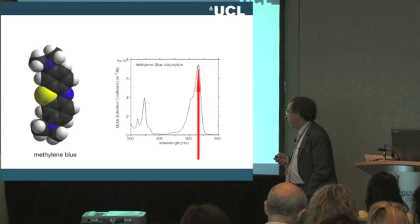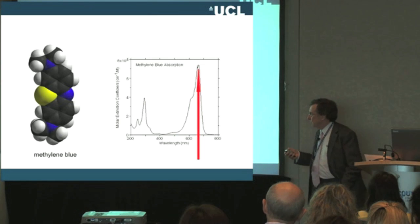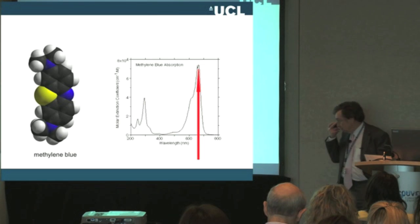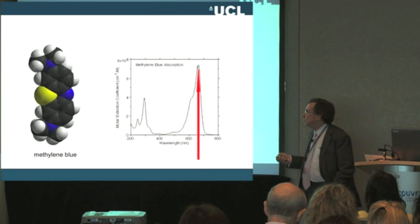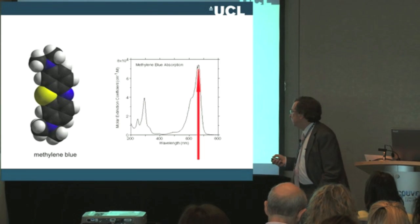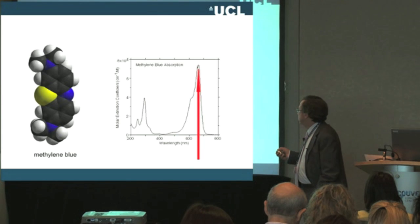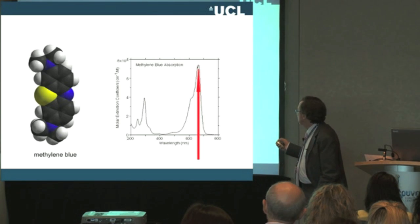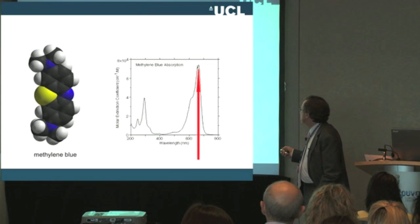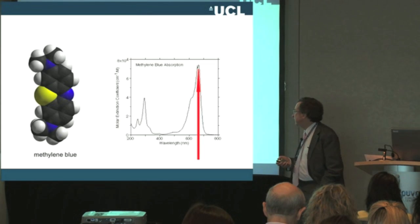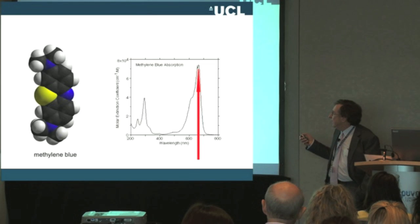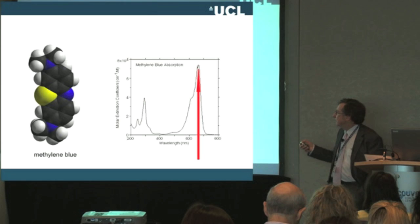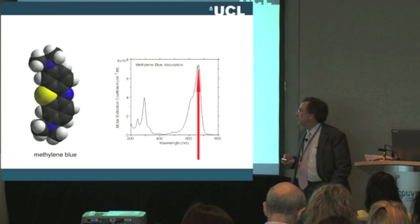One of the ones that we've done most work on is methylene blue. This is the absorption spectrum of methylene blue, and you can see it has peak absorbance over the range of about 630 to about 670-680 nm. So if you irradiate methylene blue with light of that wavelength, you can activate it.